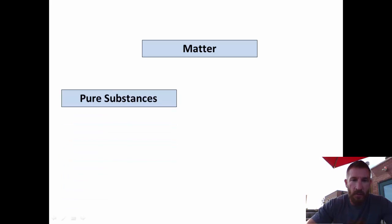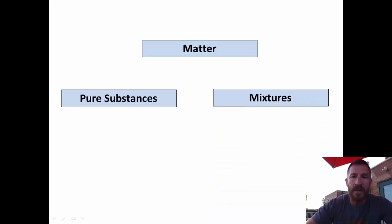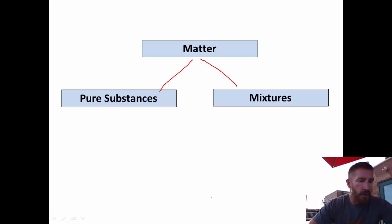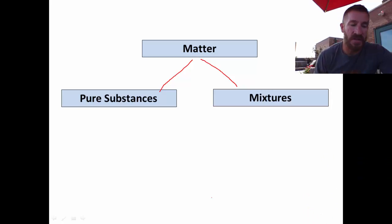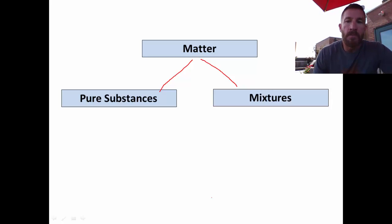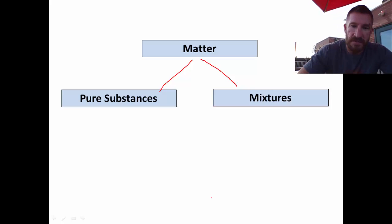One group of matter will be pure substances, and the other group will be mixtures. Pure substances will always have the same composition — you want to think of it in terms of uniformity, always the same composition regardless. Mixtures, however, will have variable composition with two or more substances.